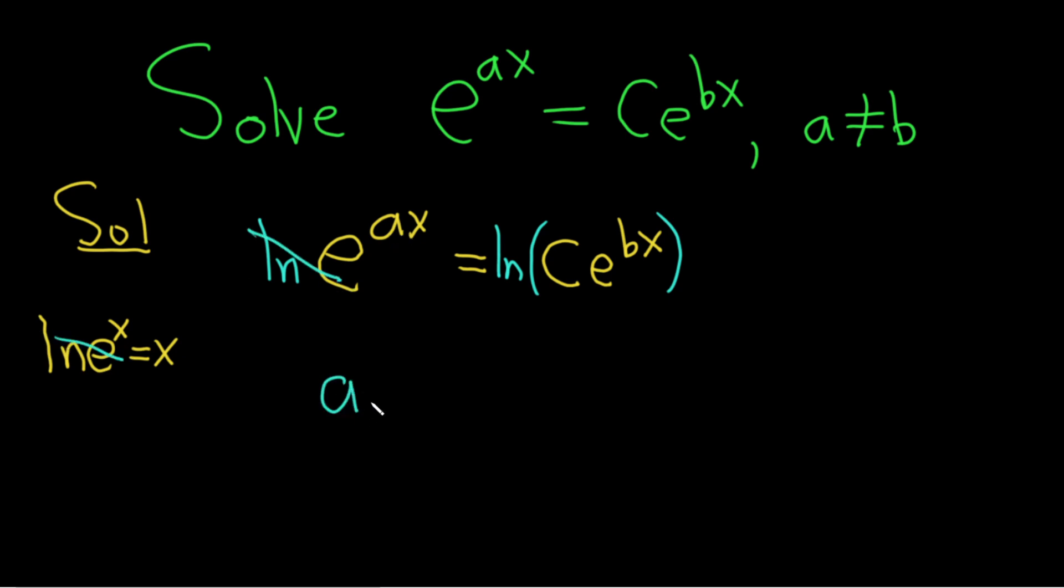We're left with ax equals. Now here we can't quite use the formula because of the c, so we'll use a different formula. We have c times e^(bx). The multiplication should make you think of the product rule. The product rule says if you have ln(uv), the multiplication turns into addition: ln(u) + ln(v). So this becomes ln(c) + ln(e^(bx)).